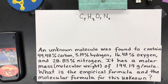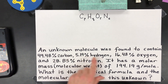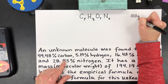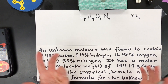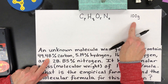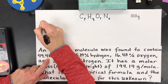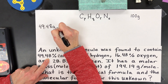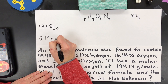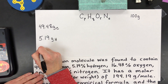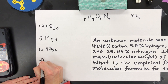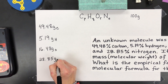Here is our practice problem. The first rule is you've got to get the masses of the chemical you're starting with. The masses are given as percents. What I'm going to do is assume I have 100 grams of this unknown compound. So that means I have 49.48 grams of carbon, 5.19 grams of hydrogen, 16.48 grams of oxygen, and 28.85 grams of nitrogen.